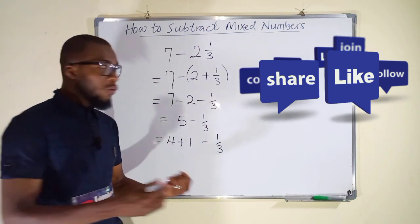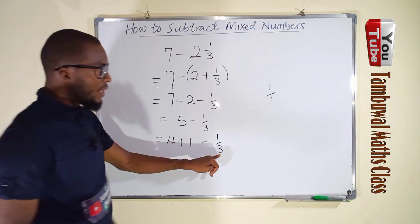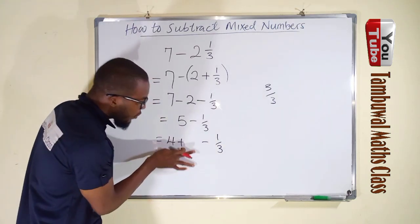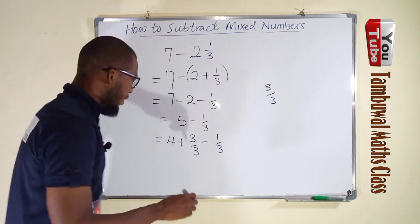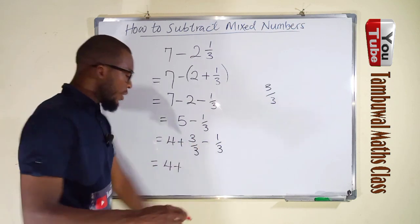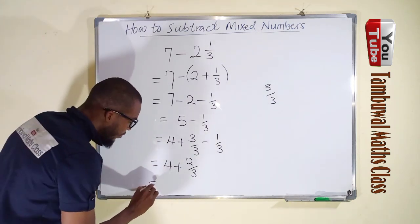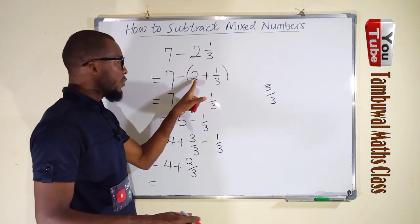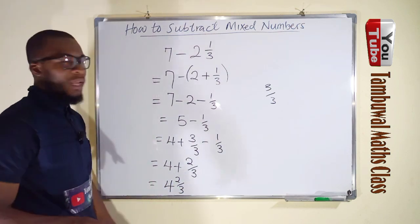We can write the 1 as 1/1, and since we have a denominator of 3, we can write it as 3/3, because 3/3 equals 1. So instead of writing 1 here, we write 3/3, and use it to subtract 1/3. This gives us 4 plus (3 minus 1) over 3, which is 4 plus 2/3. Since a mixed number is a sum of its whole number and fraction, this is written as 4 and 2/3.